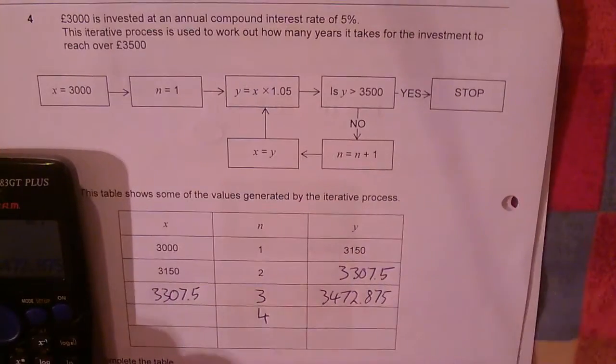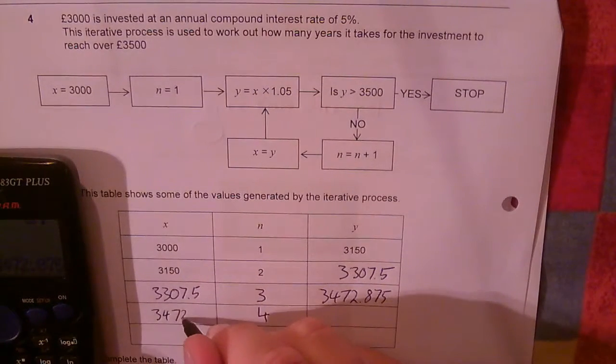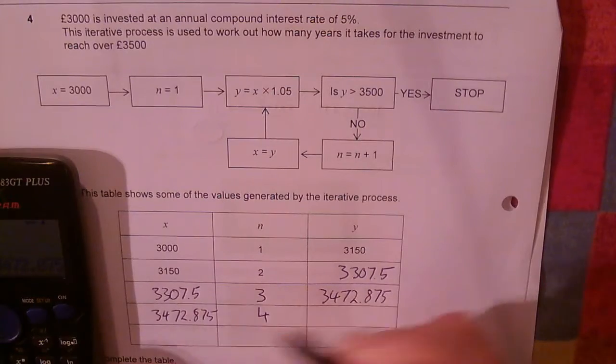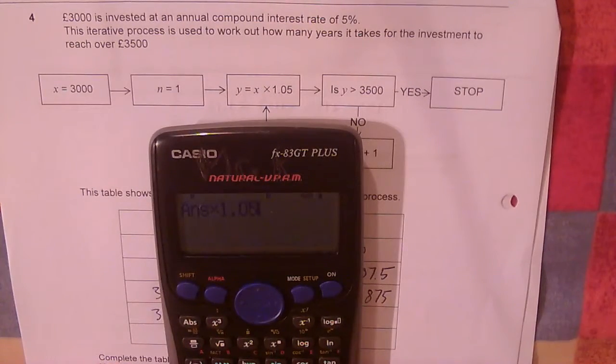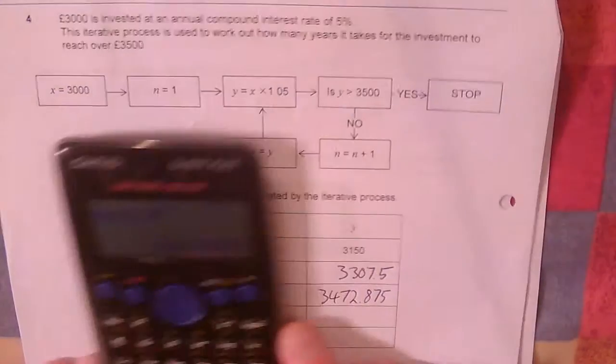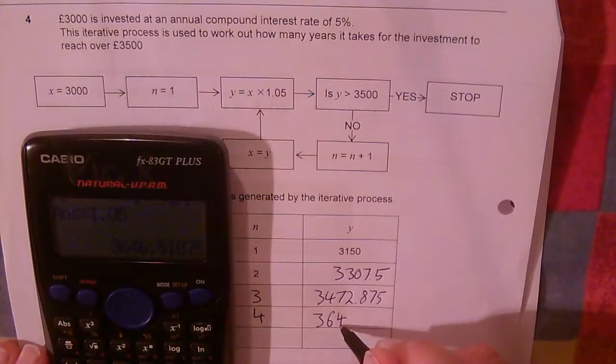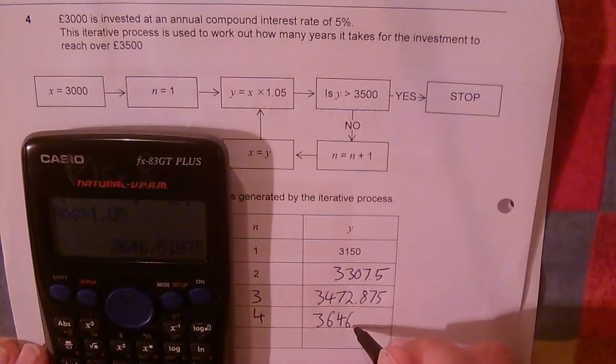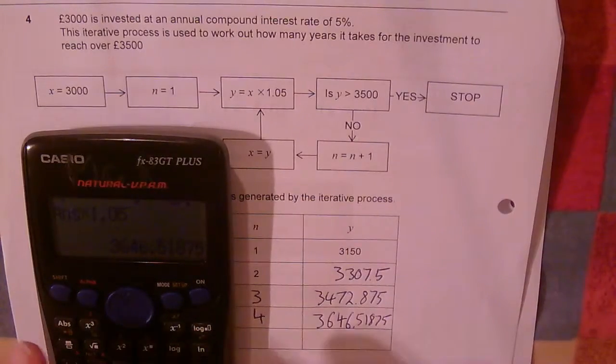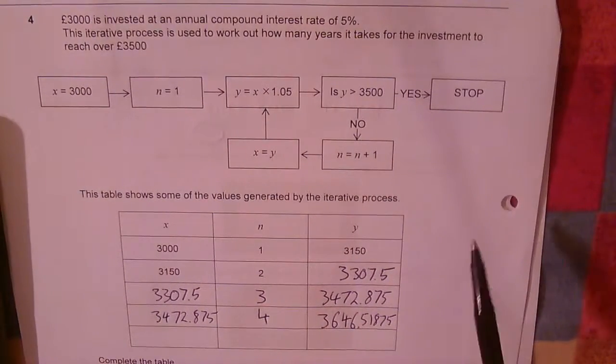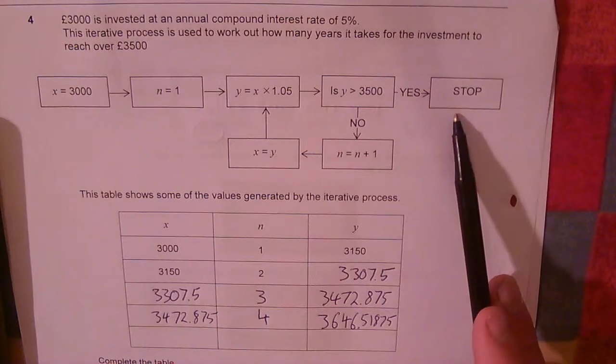So £3,472.875. I multiply that by 1.05. That gives me £3,646.51875. And I am now over £3,500. So that means the process stops.